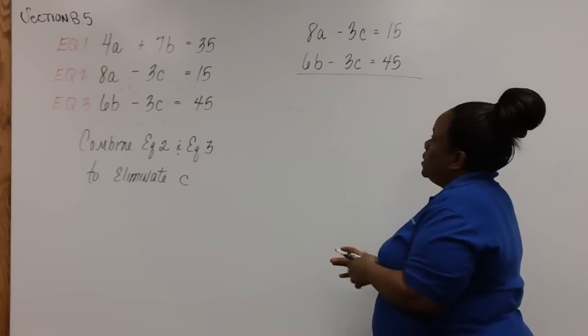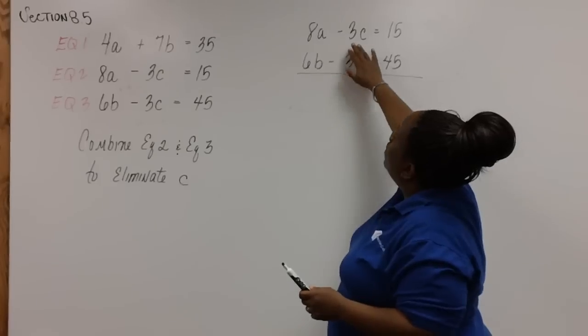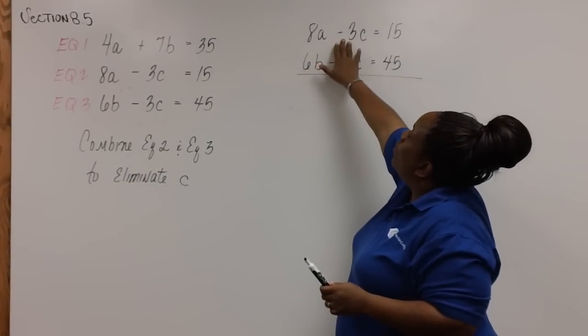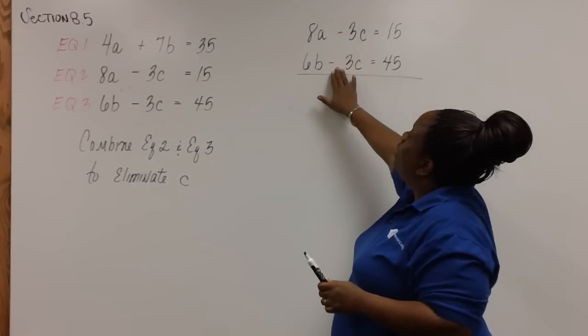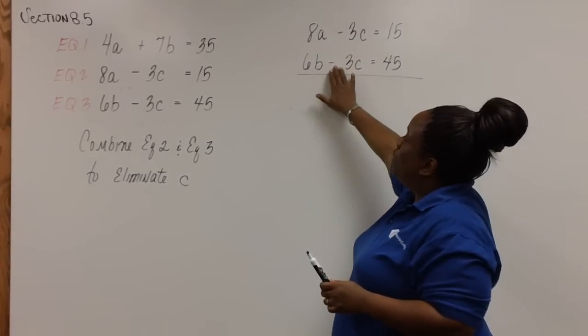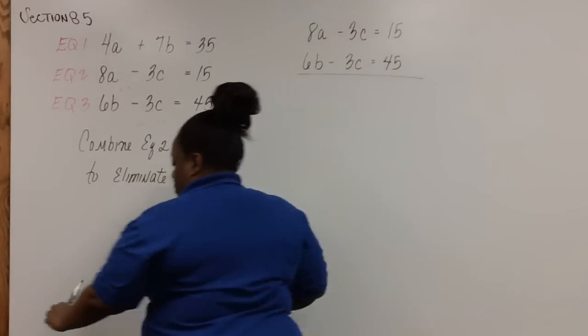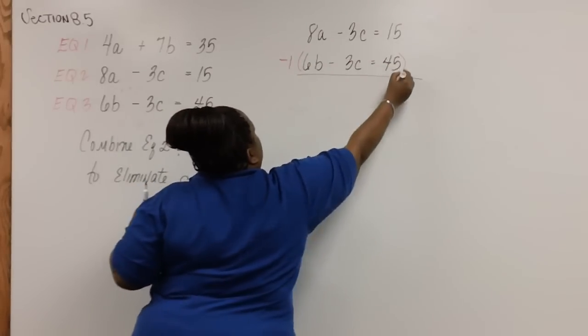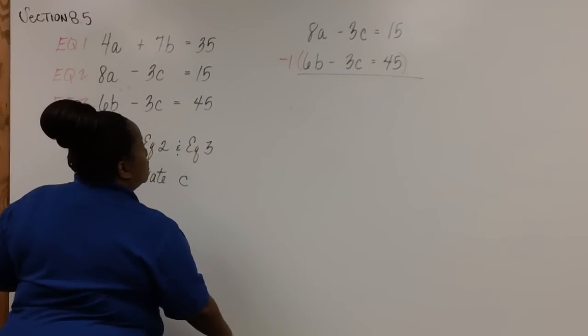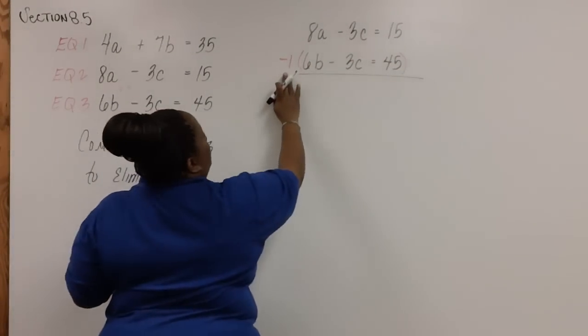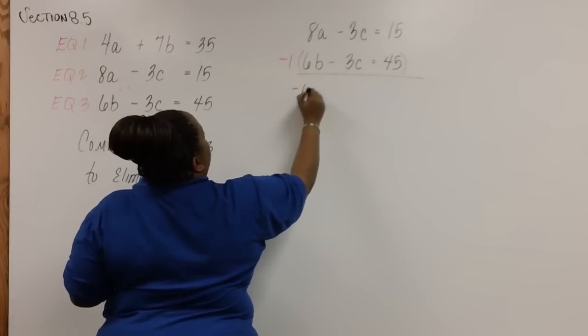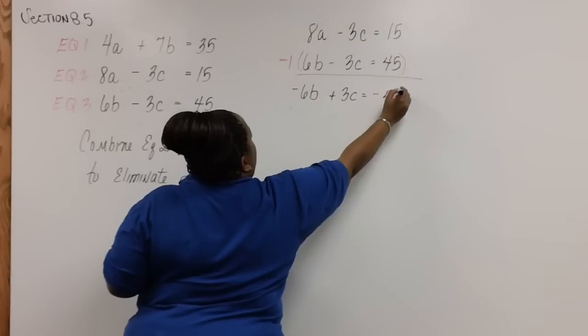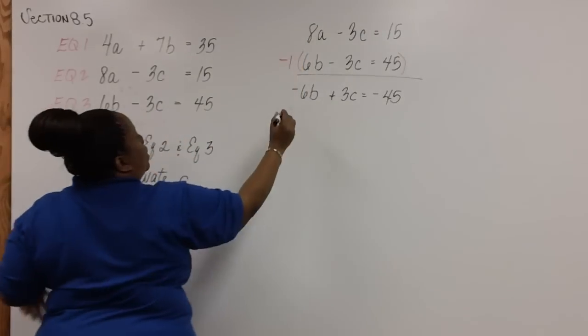Now, when we eliminate C, notice that here we have a negative three. So in order for C to cancel, we have to make this one into a positive three. And we can do that by multiplying this equation by negative one. So multiplying this equation by negative one, this is what we have.